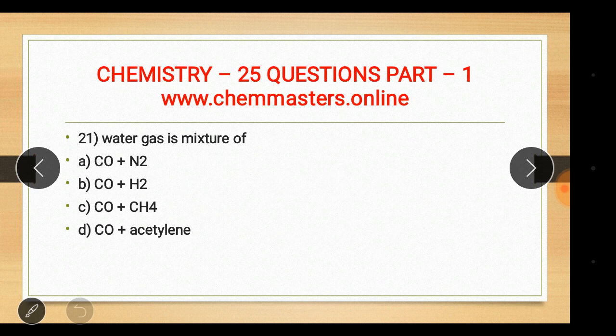Question twenty-one: water gas is a mixture of CO and H2 — answer B. CO plus N2 is called producer gas. The other options were CO plus methane and CO plus acetylene.